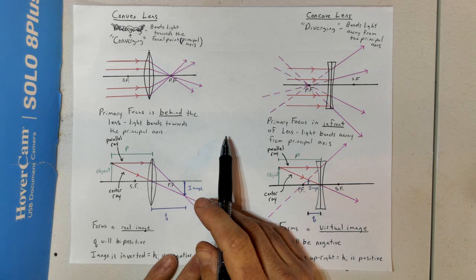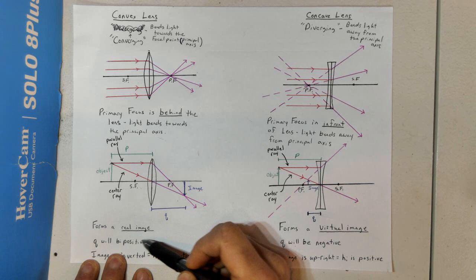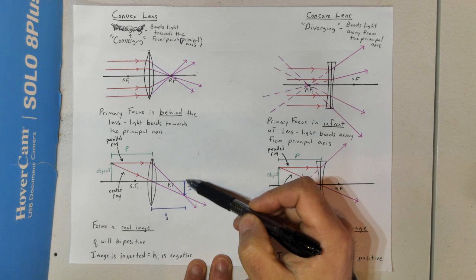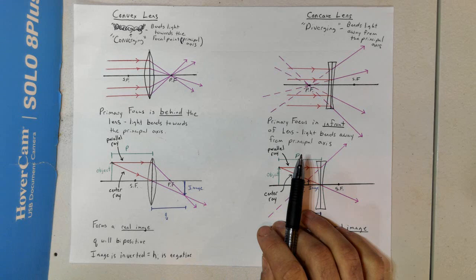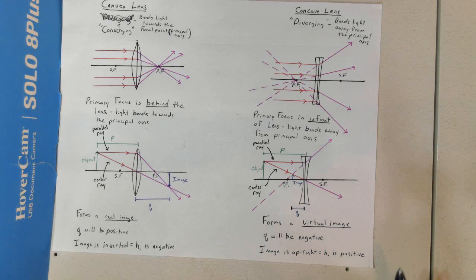It doesn't mean Q is always positive, but in this example Q is positive. The last thing we see is the image is inverted — upside down — and so the height of the image is going to be negative. That's a little bit about convex lenses.